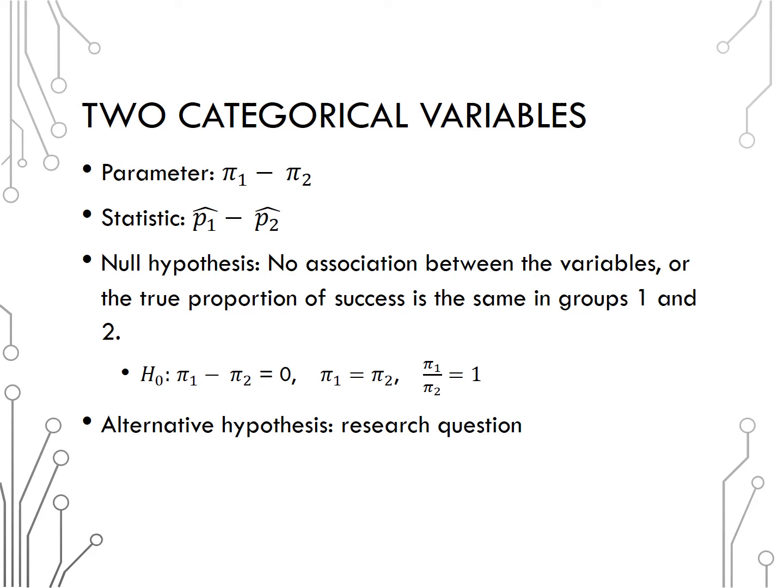Recall when working with two categorical variables we will find the conditional proportion of success within each group. The subscripts denote groups, pi represents the population proportion of successes and p hat the sample proportion of successes.